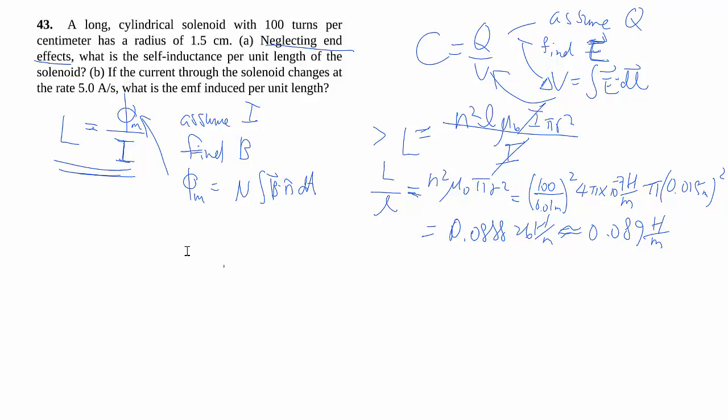...then give us some kind of dI/dt, and so to find the induced EMF we just make use of the governing equation here. So we basically multiply that number by five amps per second, which gives us negative 0.44413 volts per meter because we're talking about EMF per length of the solenoid.